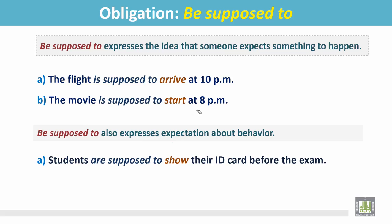Students are supposed to show their ID card before the exam. In this sentence, be supposed to is expressing the behavior of the students. They are supposed to show their ID card before the exam. We are not supposed to tell our plan to the manager. In this sentence also, are not supposed to is expressing the behavior of us.